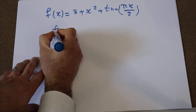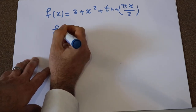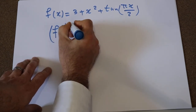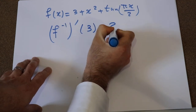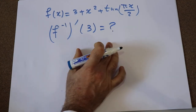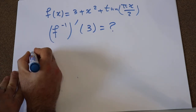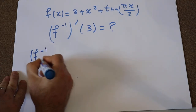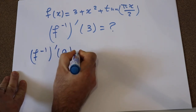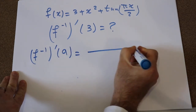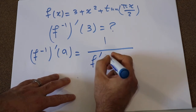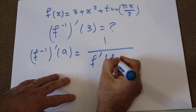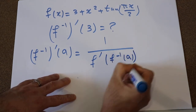The question is how to calculate the derivative of the inverse of this function at 3. To solve this question, you need to use one formula: the derivative of the inverse of a function at point A is equal to 1 divided by the derivative of the function at the inverse of that function at point A.